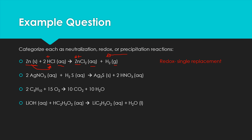For the second example, we have two aqueous solutions forming a solid and an aqueous product. There is an acid with hydrogen in front, but the key indication is that solid forming — that's our precipitate, an insoluble salt. So that is a precipitation reaction. The third example is C5H10 plus oxygen making CO2 and water — that's a classic combustion reaction. We said combustion is always redox because the oxygen is neutral in elemental form and then ends up in two compounds.